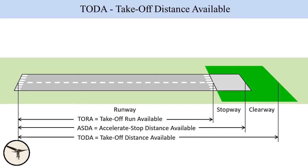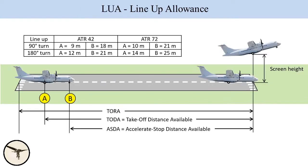TODA — takeoff distance available. This is TORA plus an eventual clearway. A clearway is an area free of obstacles at the end of the runway. In case of an engine failure at or after V1, the airplane can use the clearway to climb to the screen height. If there is no clearway, then TODA equals TORA. When the runway is short, we must also take into consideration that the aircraft may not be able to line up at the very beginning of the runway. This is called Line Up Allowance.